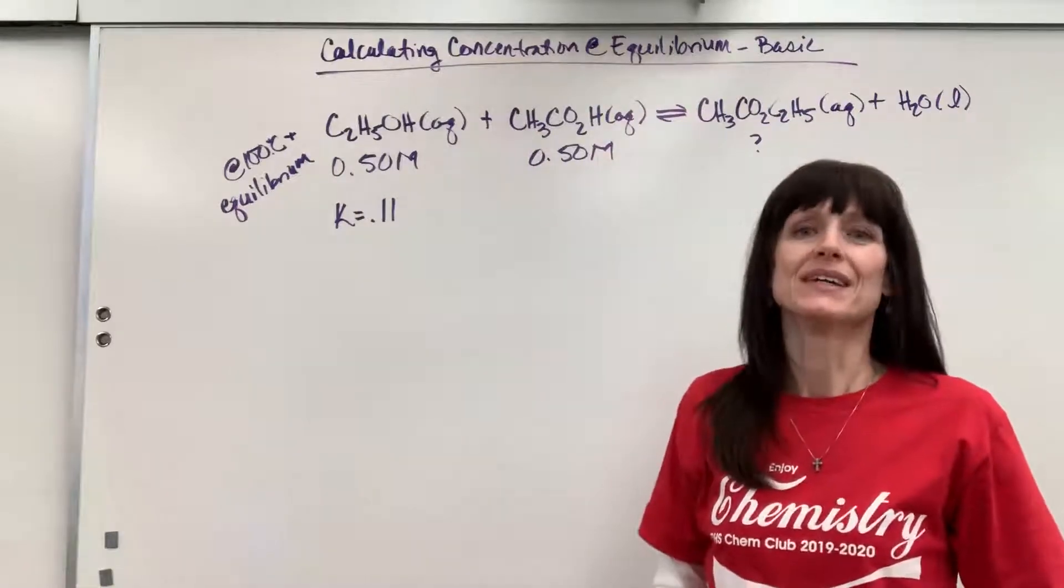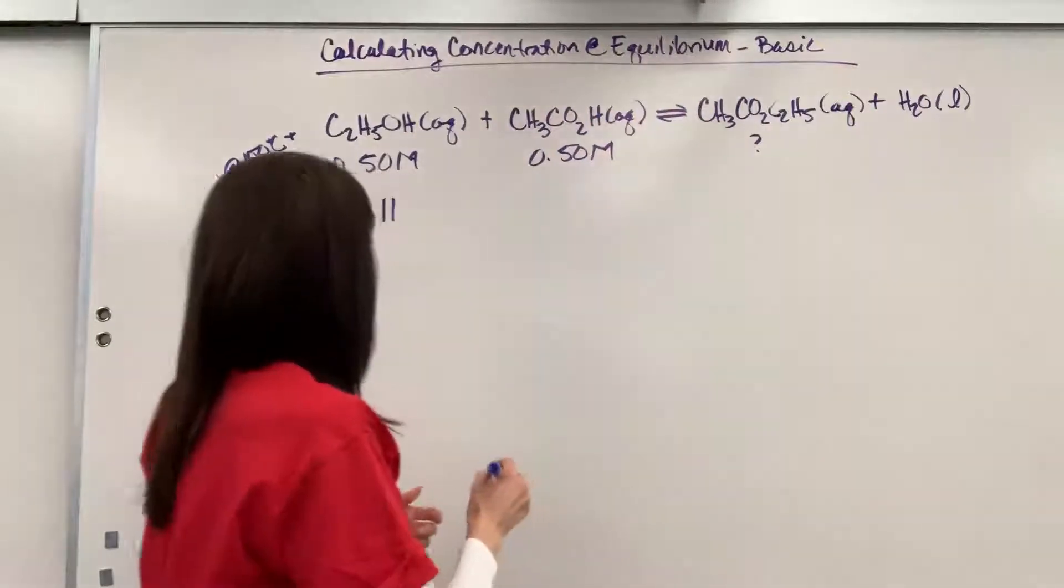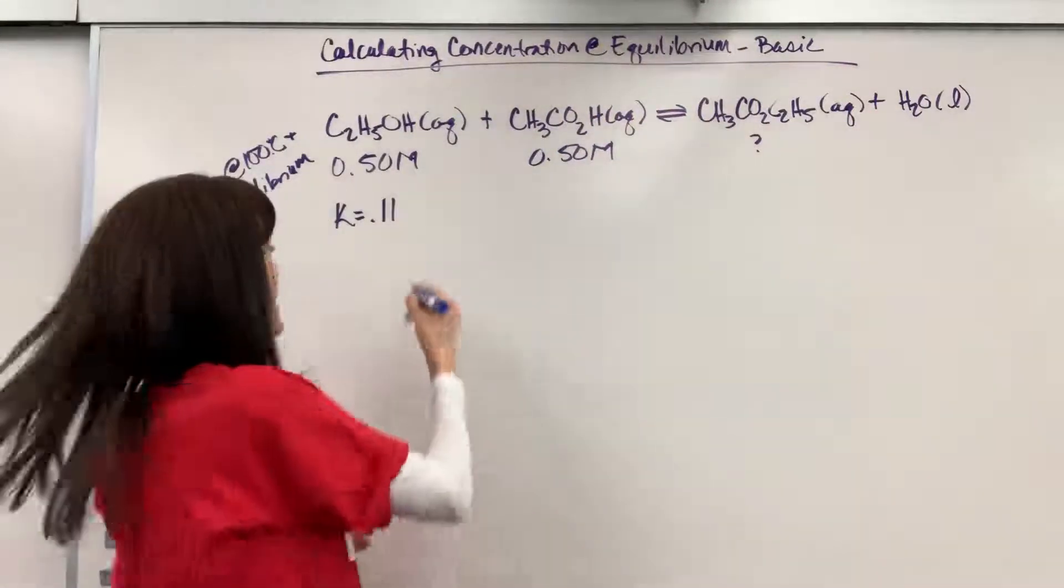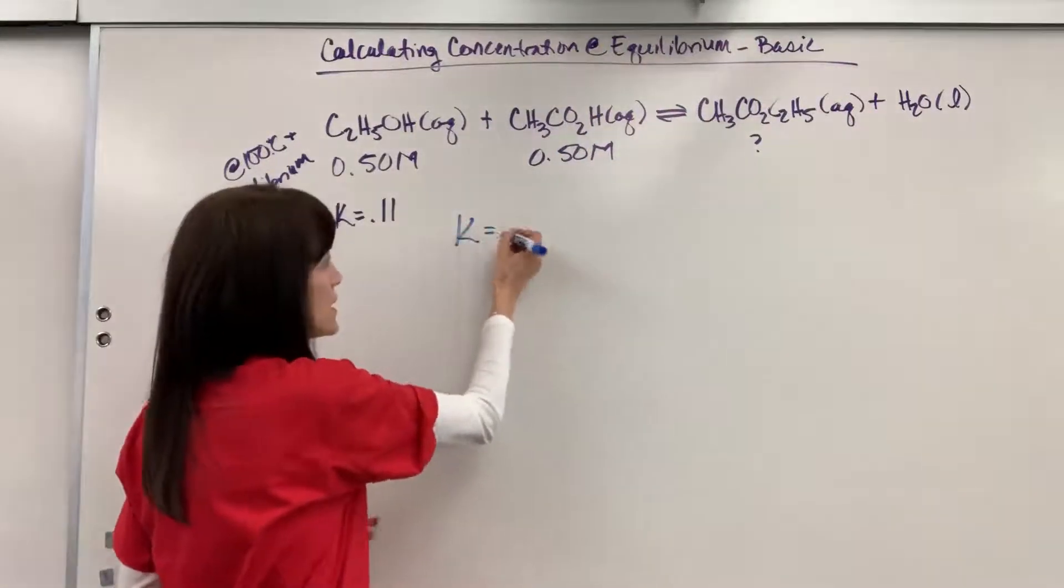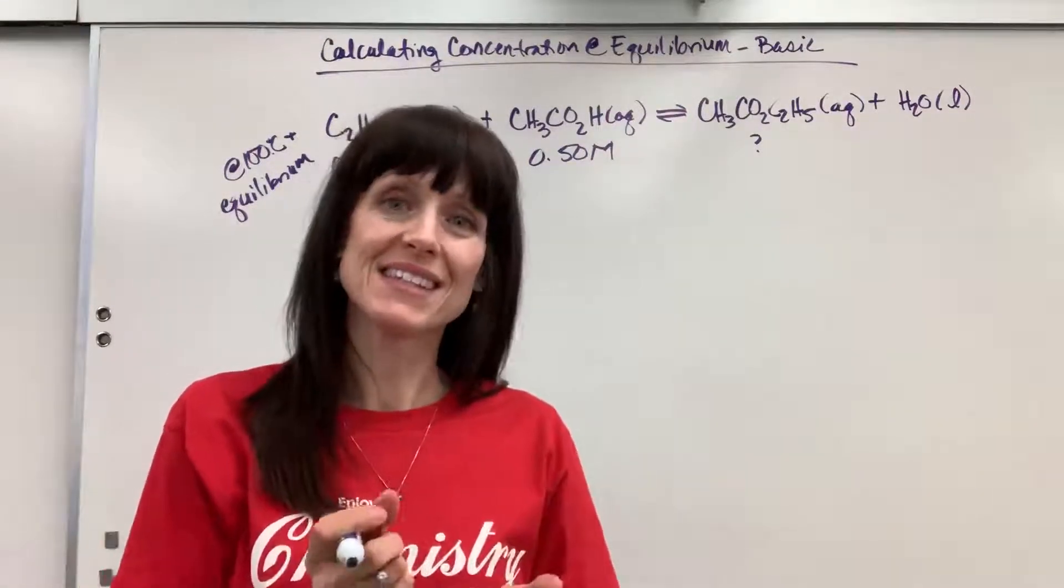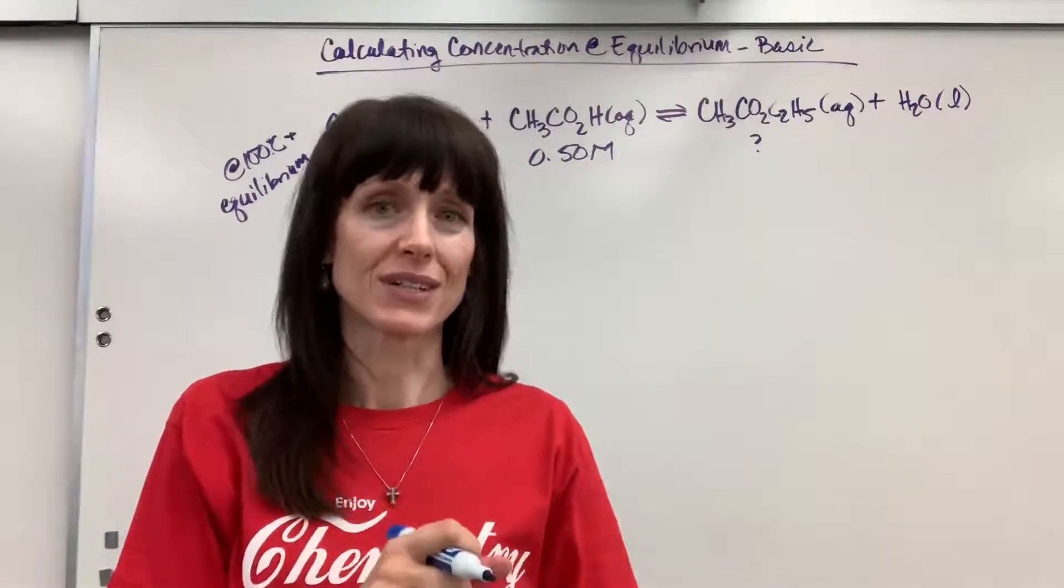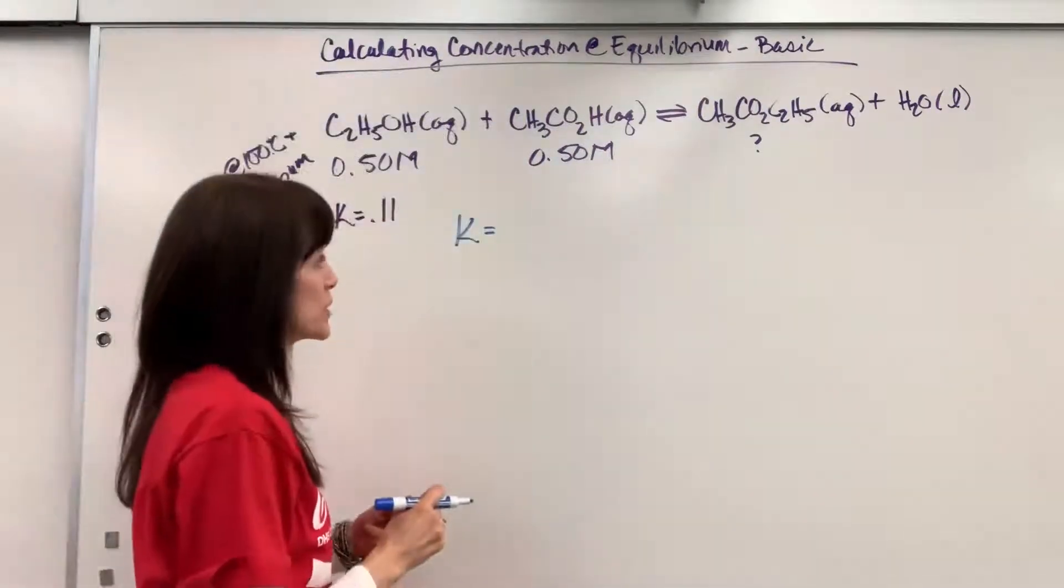First, we write the equilibrium constant expression. Remember, that's products over reactants. K equals... Also remember, we only use aqueous and gases in the equilibrium expression. We never use solids or liquids. Solids and liquids are considered constants, so we don't write those in the equilibrium expression.